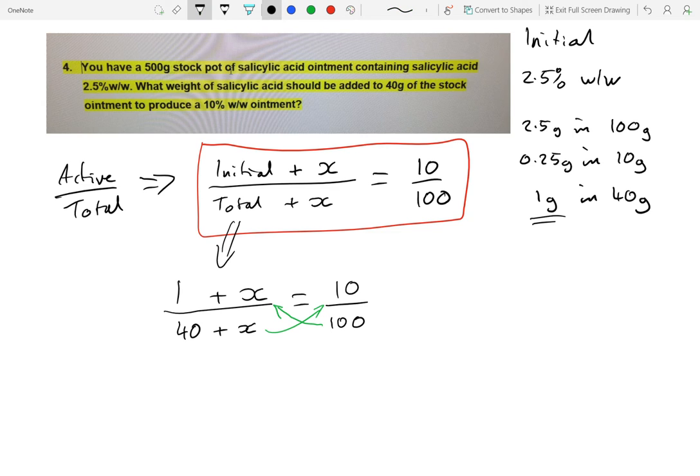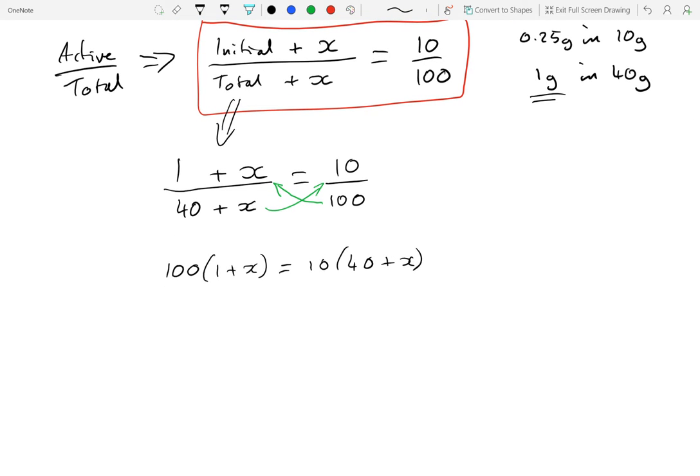And what does that look like? It's 100 times by 1 plus x equals 10 times by 40 plus x. Multiply out the brackets and we get 100 plus 100x equals 400 plus 10x.